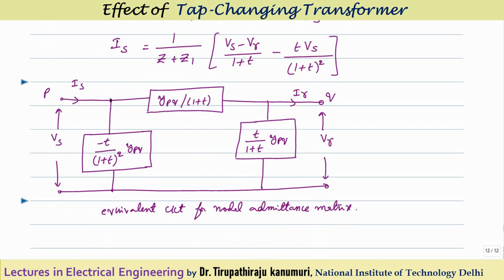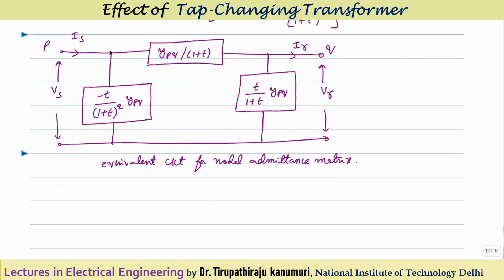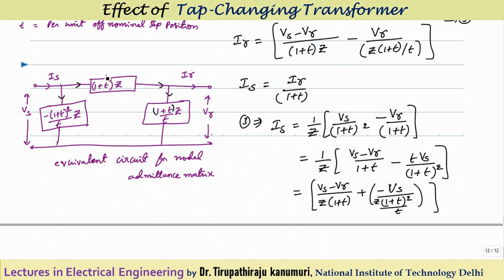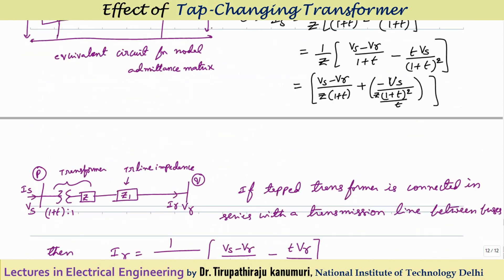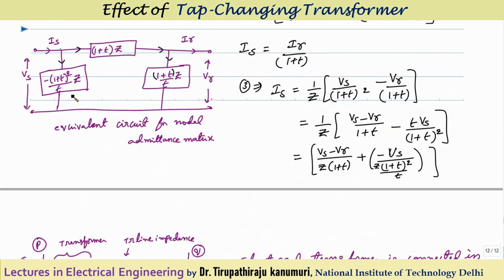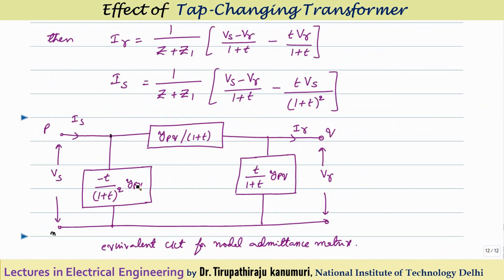Once the equivalent impedance values are obtained, we convert to admittances (admittance = 1/impedance). Taking two nodes P and Q with a reference neutral node, the series admittance is YPQ/(1+T), the shunt admittance at P is −T/(1+T)² × YPQ, and the shunt admittance at Q is T/(1+T) × YPQ.